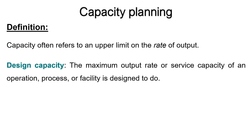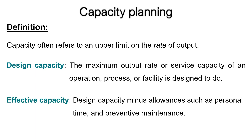The first is the design capacity — that is the maximum output rate or service capacity an operation, process, or facility is designed to do. The second is the effective capacity, which is the design capacity minus allowances such as personal time and preventive maintenance.